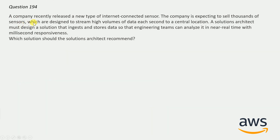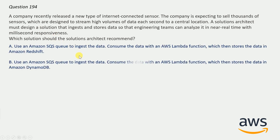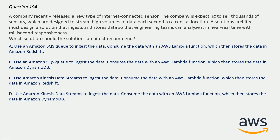Question number 194: A company recently released a new type of internet-connected sensor. The company is expecting to sell thousands of sensors which are designed to stream high volumes of data each second to a central location. A solution architect must design a solution that ingests and stores data so that the engineering team can analyze it in near real time with millisecond responsiveness. The correct option is D: Use Amazon Kinesis Data Streams to ingest the data. For data ingestion, Kinesis Data Streams is the right choice, and this is available in option D but not in options A and B, which are already eliminated.